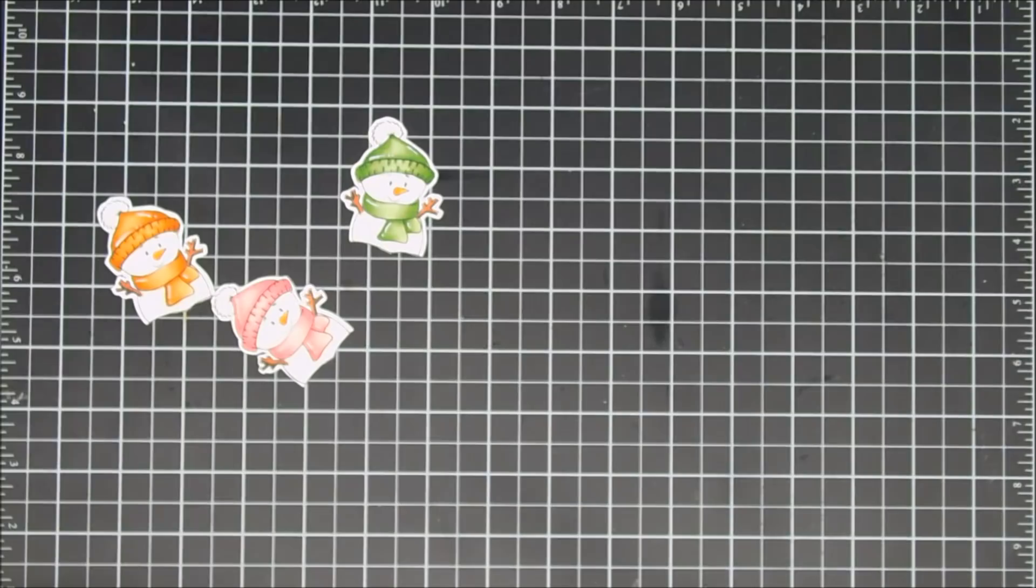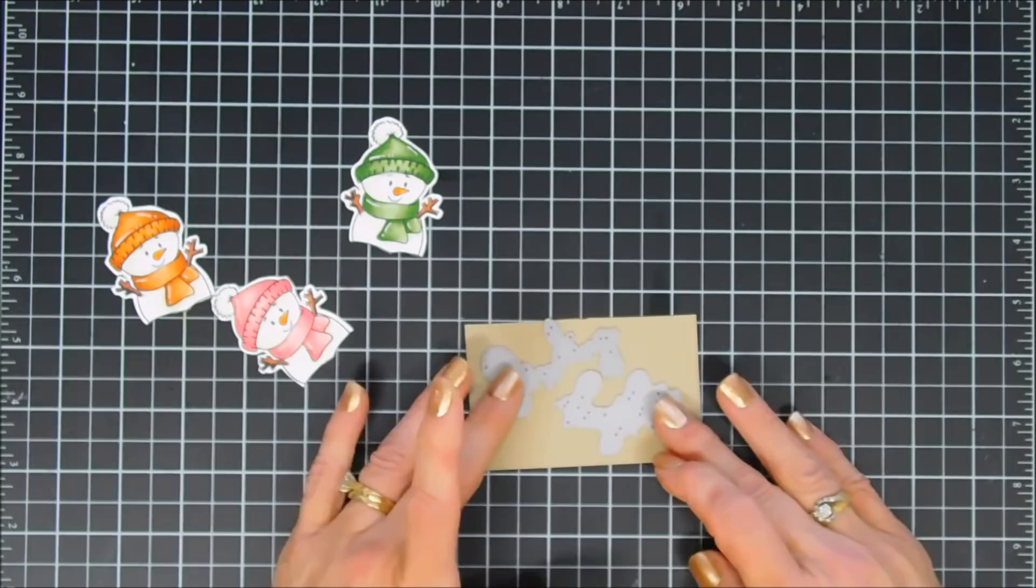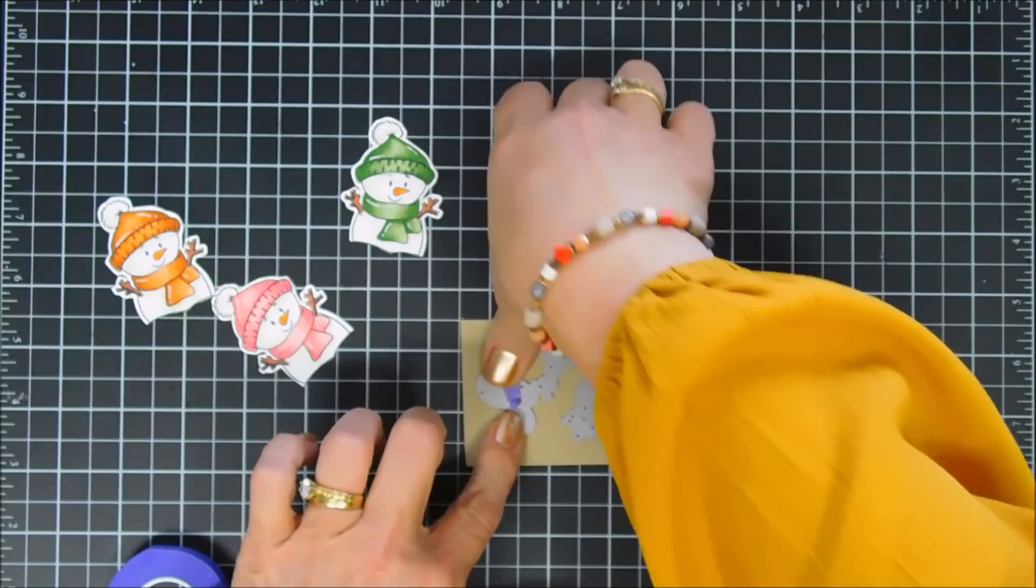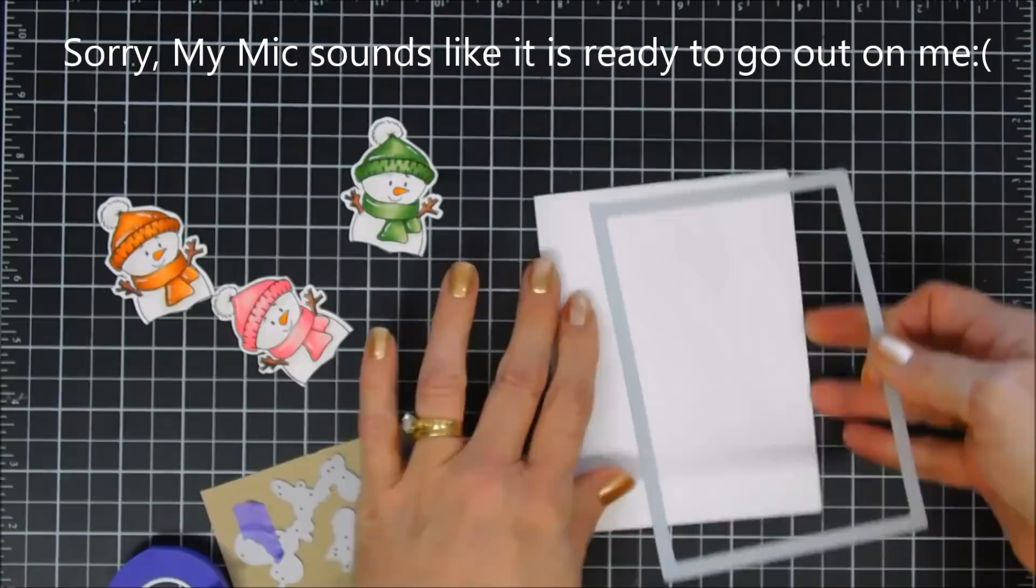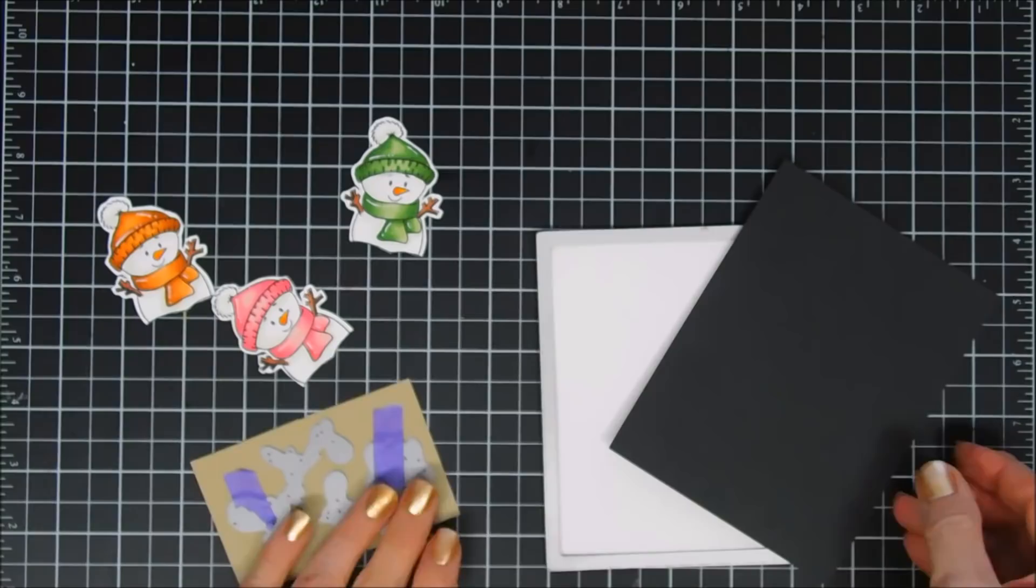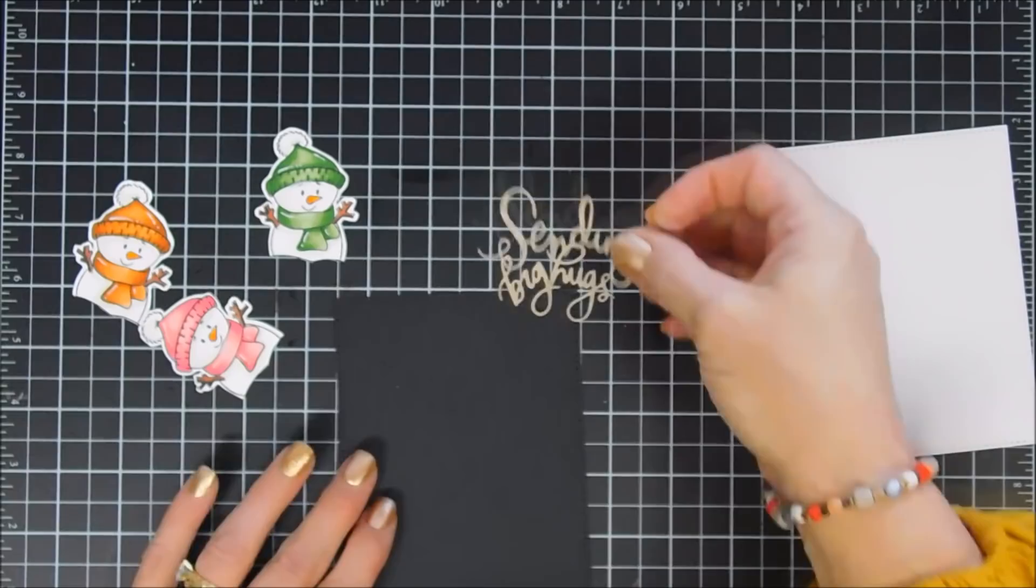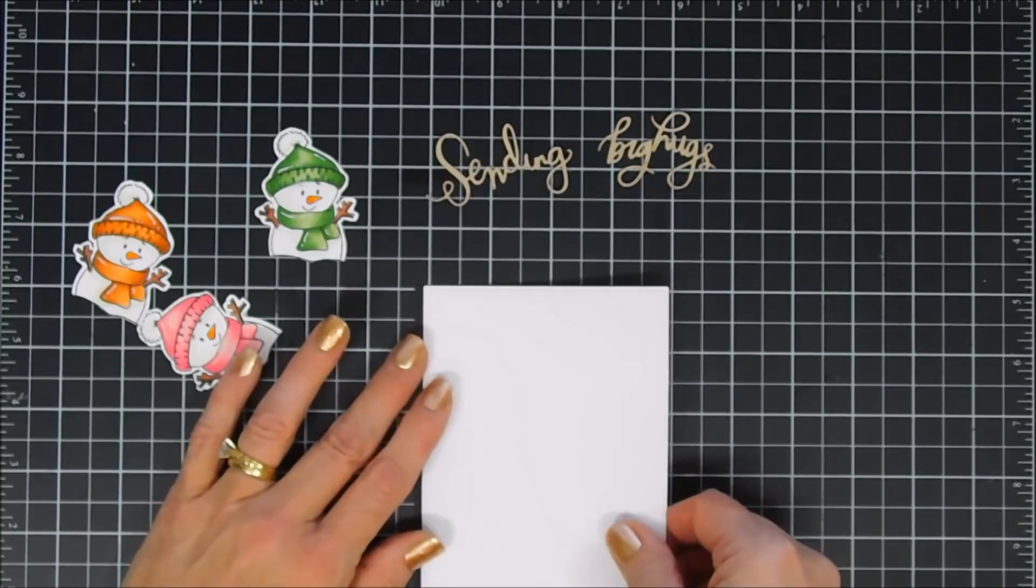Now since the stamp set is small there's no sentiment in here. I'm going to bring in some sentiment dies, these are from Simon Says Stamp. There's two different sets, one says Sending, the other one says Big Hugs. And I'm going to die cut those out with Neenah Desert Storm craft cardstock and then using my largest stitched rectangle die we're going to die cut out a black and white panel that measures 4 inches by 5 and a quarter. Now everything is die cut, we're going to kind of arrange our little scene.